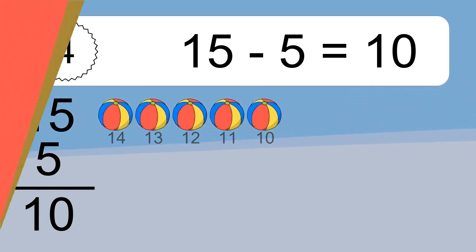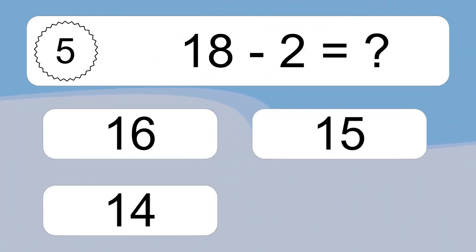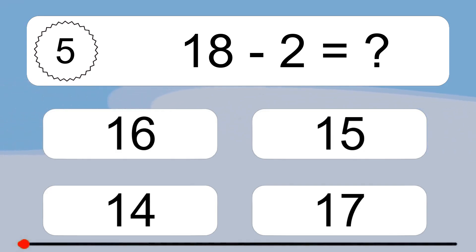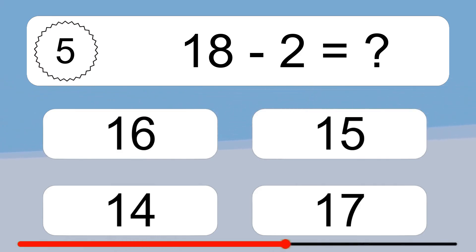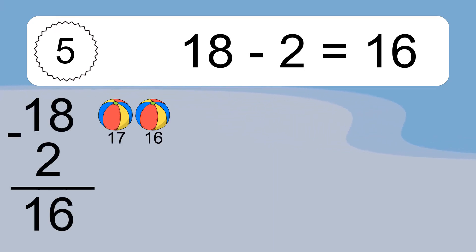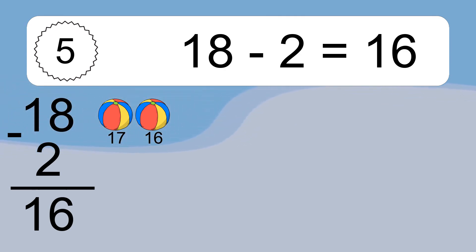18 minus 2 equals what? 18 minus 2 equals 16. Let's count it: 17, 16.